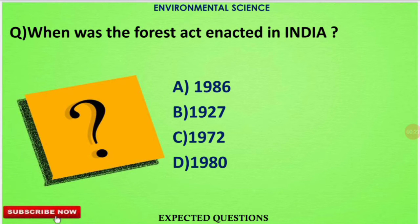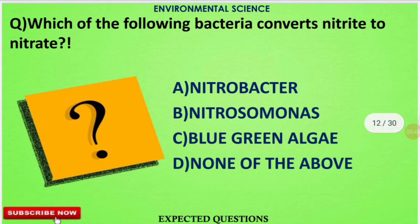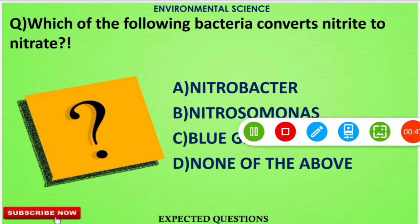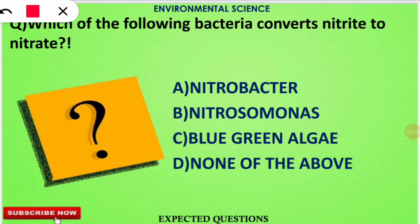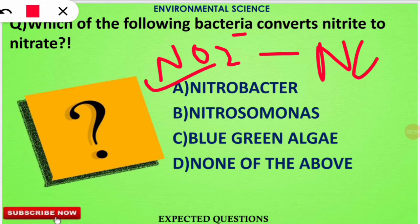The next question is which of the following bacteria converts nitrite to nitrate. Note it is asking nitrite to nitrate, so the correct option will be option number A — Nitrobacter. Yes, Nitrobacter converts NO₂⁻ into NO₃⁻, that is nitrate.